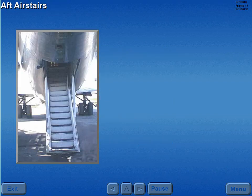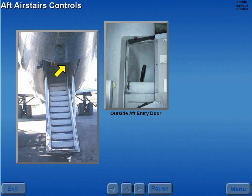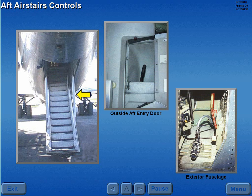The aft air stairs attaches to a section of the lower aft fuselage. This section forms a staircase with over center struts for tail support to prevent tail tip down. The air stairs is controlled from the upper control station located outside the aft entry door, or the lower control station located on the exterior fuselage to the right of the tail skid.